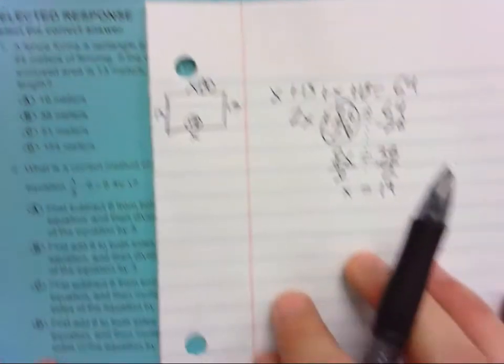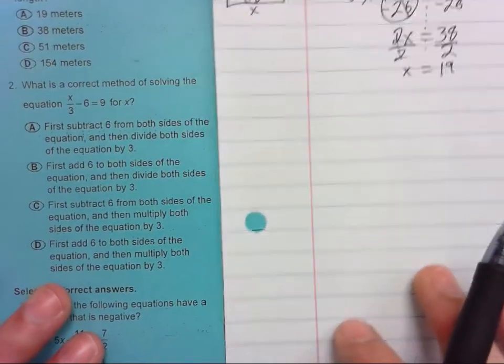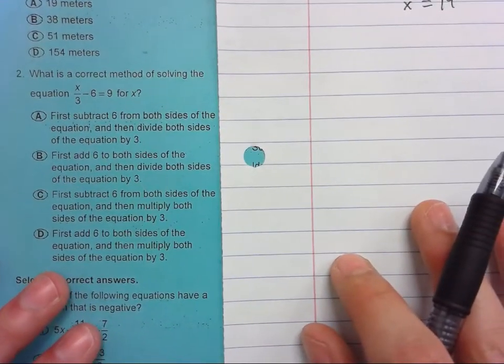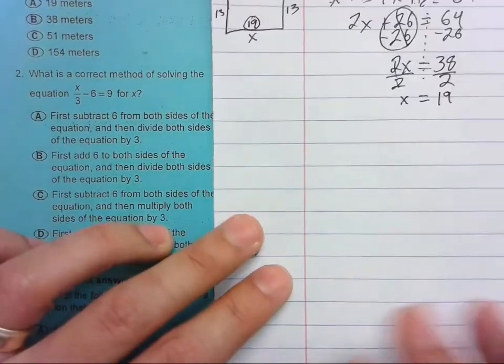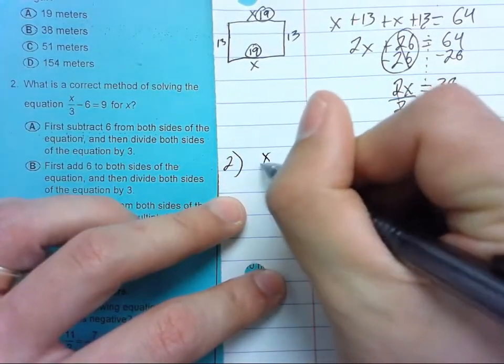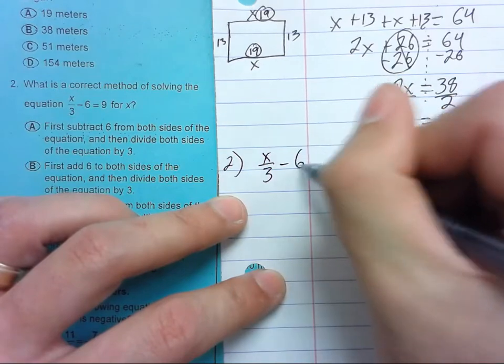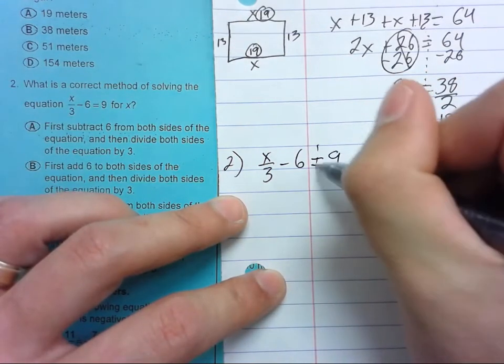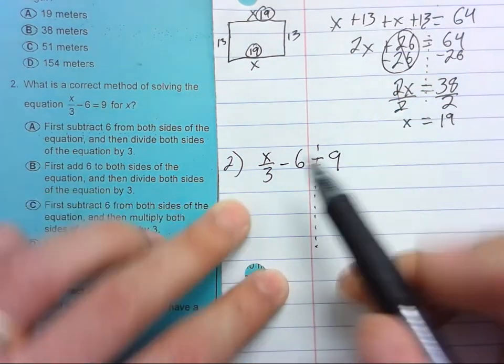What is the correct method of solving this equation? So for number 2, we can do X over 3 minus 6 equals 9. So it's not telling us to solve it. Just what do we do?